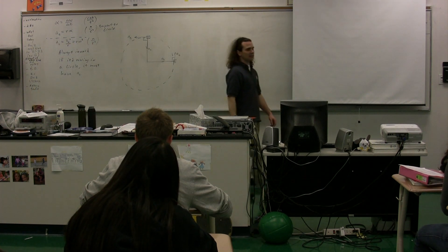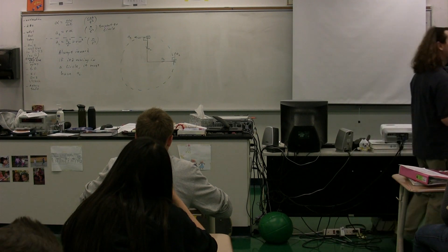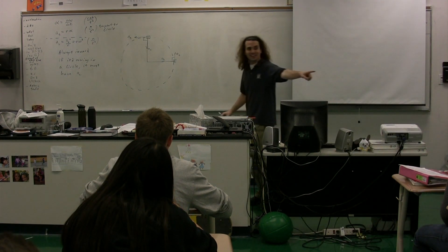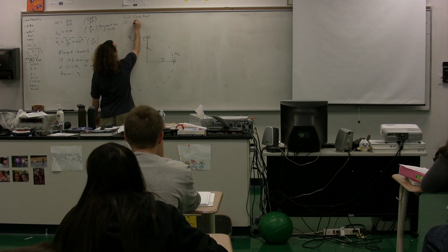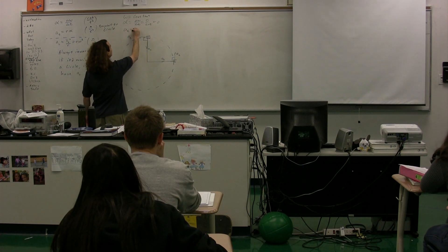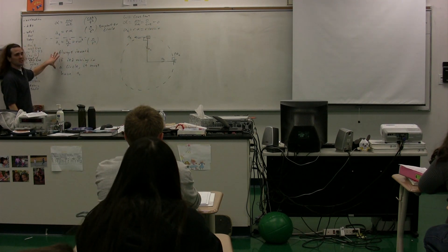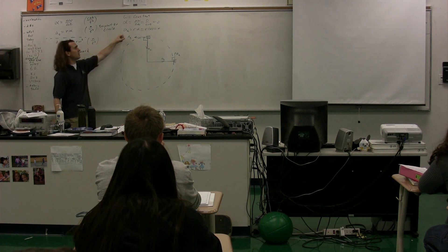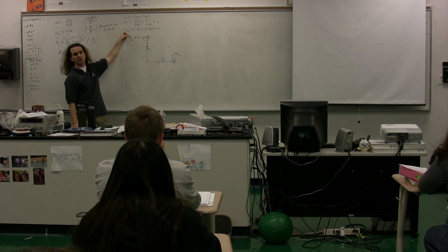Can an object be moving in a circle and not have tangential acceleration? Eric? Yes. How? It's moving at constant angular velocity. If the angular velocity is constant, this means that the angular acceleration — equal to the change in angular velocity over change in time — is equal to zero. It also means that the tangential acceleration, which equals radius times angular acceleration, is also equal to zero. So if something is moving in a circle you must have centripetal acceleration, but you don't necessarily have tangential or angular acceleration if the angular velocity is constant.